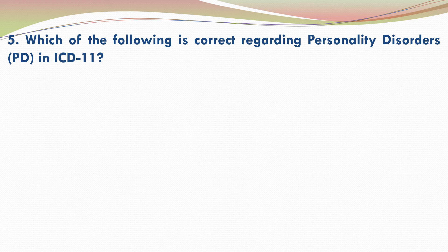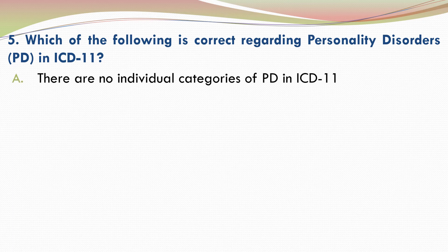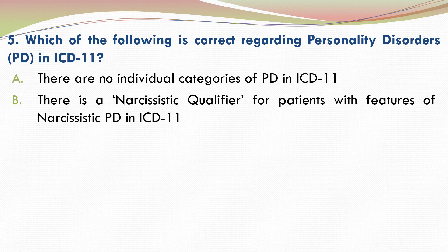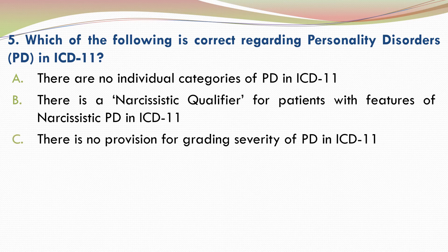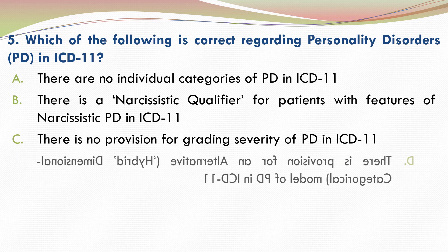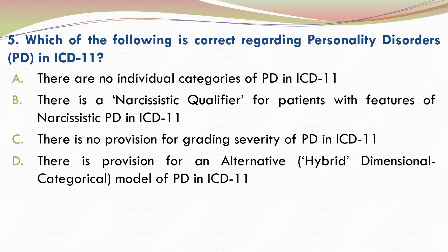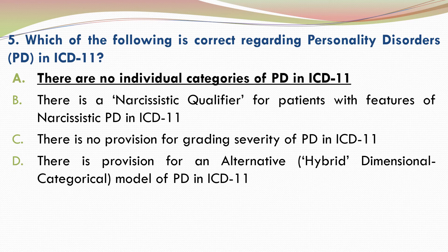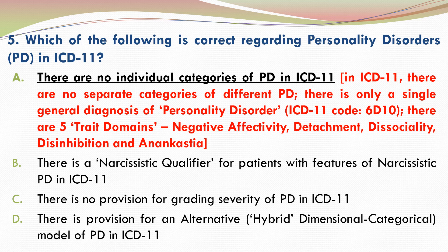Question 5: Which of the following is correct regarding personality disorders in ICD-11? Please go through the four options and select your answer. The correct answer is A: there are no individual categories of personality disorder in ICD-11. In ICD-11, there are no separate categories of different personality disorders. There is only a single general diagnosis of personality disorder.